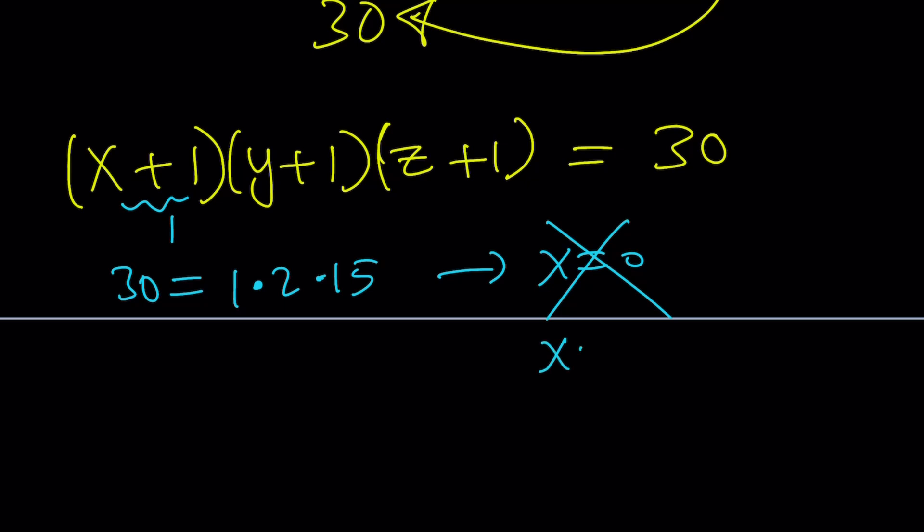And we do know that xyz does not equal 0, which means none of them is 0. So, you can never use a 1 in the product.